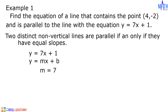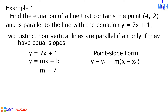It means that the slope of the line that contains the point (4, -2) is also equal to 7. Let us use point-slope form in writing the equation of the line. We have y - y₁ = m(x - x₁). Let us substitute the given values: y - (-2) = 7 × (x - 4).